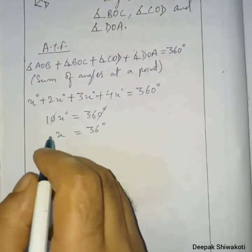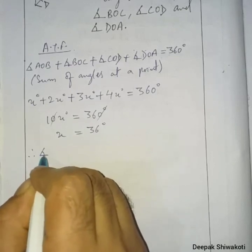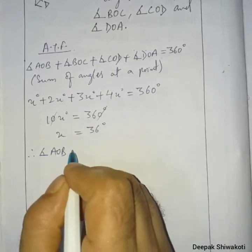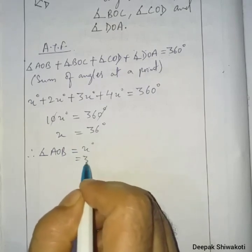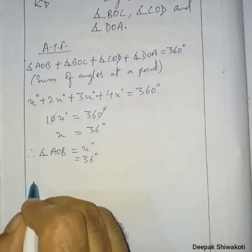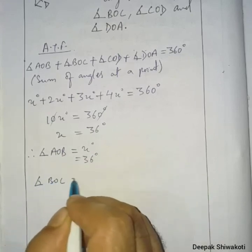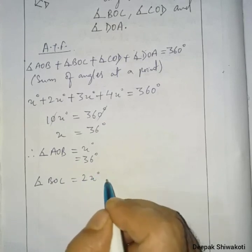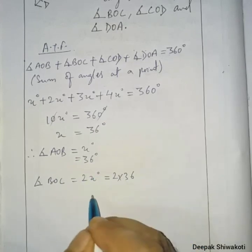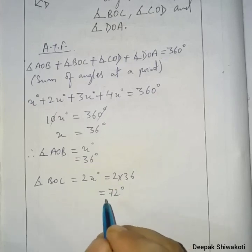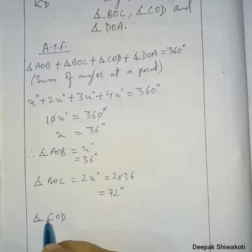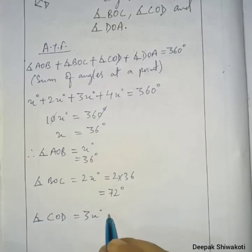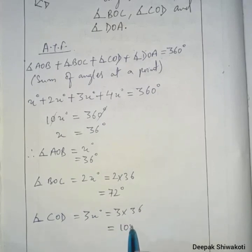Angle AOB equals x degrees, so AOB equals 36 degrees. Angle BOC equals 2x degrees, which is 2 times 36 equals 72 degrees. Angle COD equals 3x degrees, which equals 108 degrees.